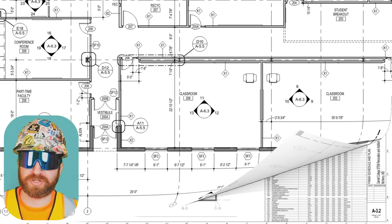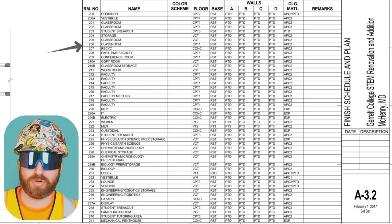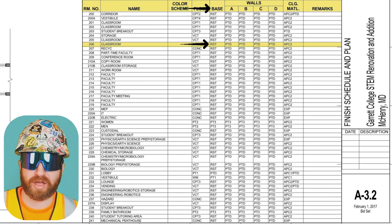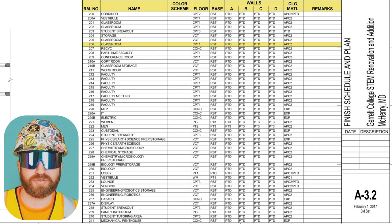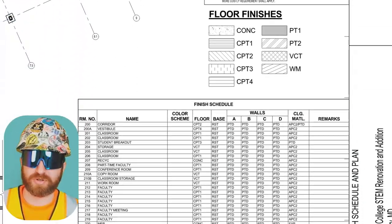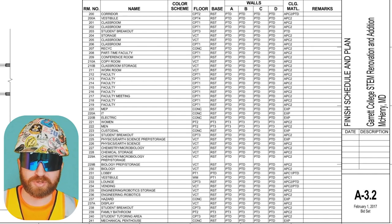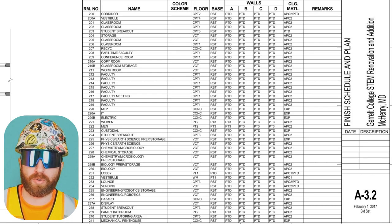Looking at room 206, let's flip to A3.2. This finish schedule is going to show you the materials that are going to be installed in this specific room. When I'm looking at 206 - classroom - we can go across this list and see what is going to be installed on the floor, what kind of base you'll have, what goes on the walls, and what your ceiling type is. For 206, I see CPT1 - from experience, I know CPT1 probably stands for carpet, and looking above we can confirm this. Next, RST stands for rubber base. This also tells us what is going to be on the walls, the ceiling, and in much more detail. All we have to do is keep navigating through this page to make the acronyms make sense - they're usually outlined somewhere else if you don't know what they stand for right away.